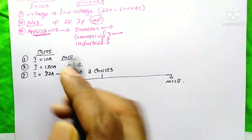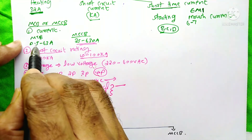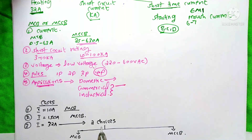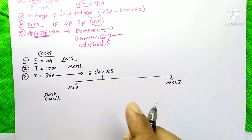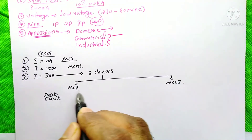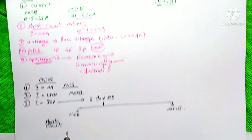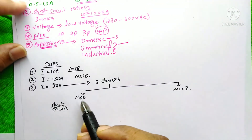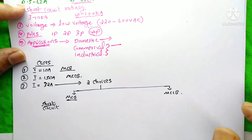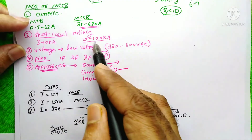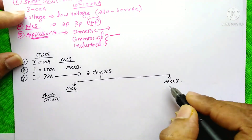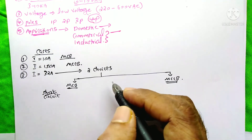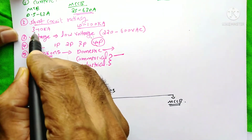The next case is if the circuit current is 32 amperes. Both MCB (0.5–63 A) and MCCB (25–630 A) cover this range, so you could select either — there is no problem. The next factor to consider is the short circuit current. If the short circuit current is less than 10 kilo-amperes, you can select the MCB, whose range is 3 to 10 kilo-amperes. But if the short circuit current is more than 10 kilo-amperes, that falls in the MCCB range, and you must select only the MCCB.